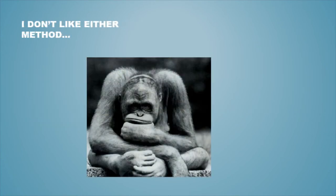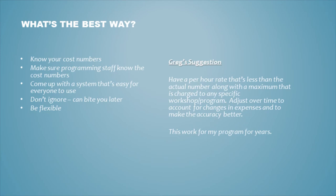Neither method by itself gives a very good idea of how much to charge each class for indirect expense. The best approach: know your cost numbers using both methods, make sure your programming staff knows these numbers, and come up with a system that's easy for everyone to use. Don't ignore your indirect expenses — they can come back to bite you. You can look like you have a very successful program and end up negative on profit because you didn't account for indirect expenses. My suggestion: have a per-hour rate that's less than the actual number, along with a maximum charged to any specific workshop. Adjust that number over time for accuracy.